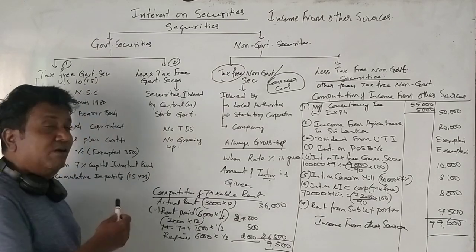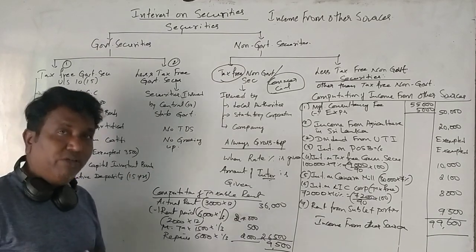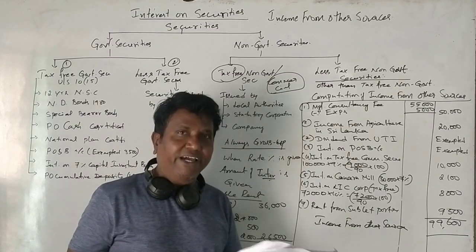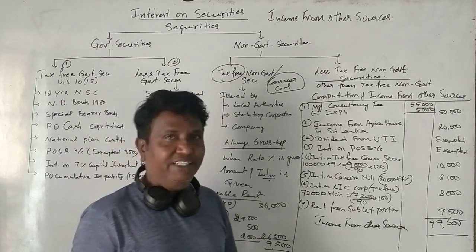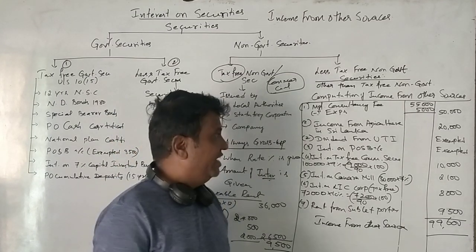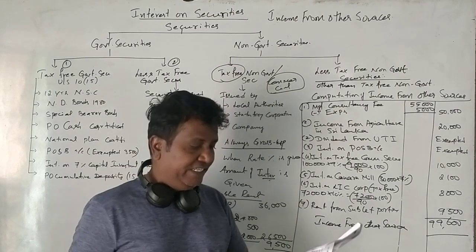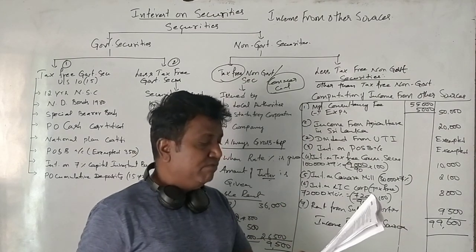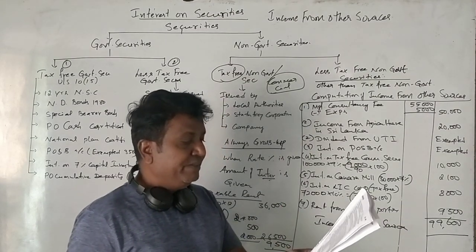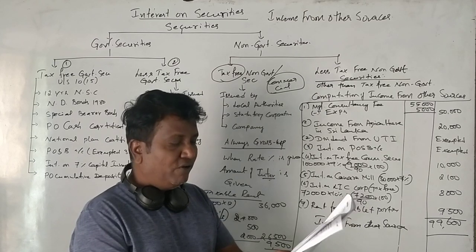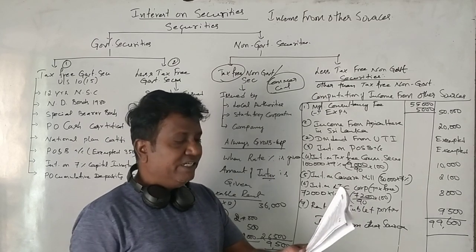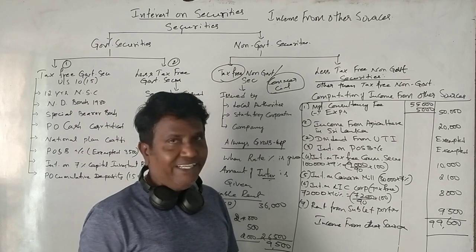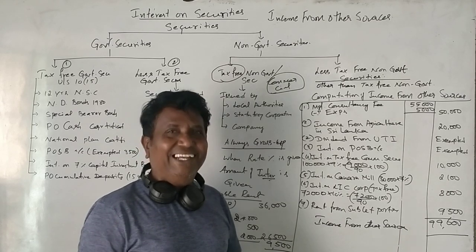For the post office savings bank account, interest up to ₹500 is fully exempted per account. If you earn more than ₹500, say ₹3,500, then the difference amount above the exemption limit is taxable. Up to ₹1,000 is exempt and the balance is added to income.